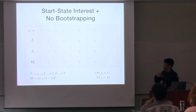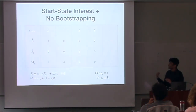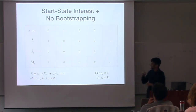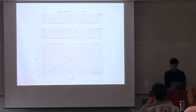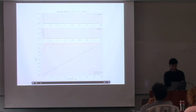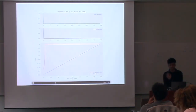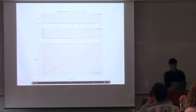Now for start state interest without bootstrapping (lambda=1). In this case, what you're doing is essentially a Monte Carlo estimate of just the start state value, because the emphasis is one there. Interestingly, you essentially learn just the start state value - you don't learn about any other states. In the Monte Carlo sense, that's kind of what you see here.